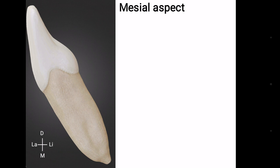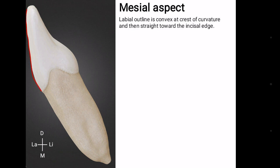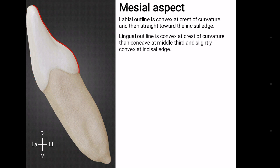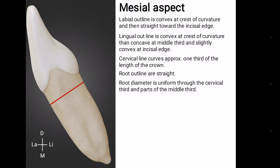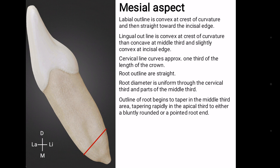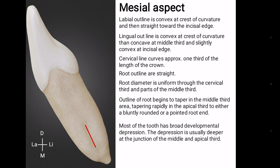Mesial aspect — that is the surface of the tooth which is towards the midline. The labial outline is convex at the crest of curvature and then straight toward the incisal edge. The lingual outline is convex at the crest of curvature, then concave at the middle third, and slightly convex at the incisal edge. The cervical line curves approximately one third of the length of the crown. Root outlines are straight, with root diameter uniform through the cervical third and parts of the middle third. The outline of the root begins to taper in the middle third area, tapering rapidly in the apical third to either a blunt rounded or pointed root end. Most of the tooth has a broad developmental depression, usually deeper at the junction of the middle and apical third.